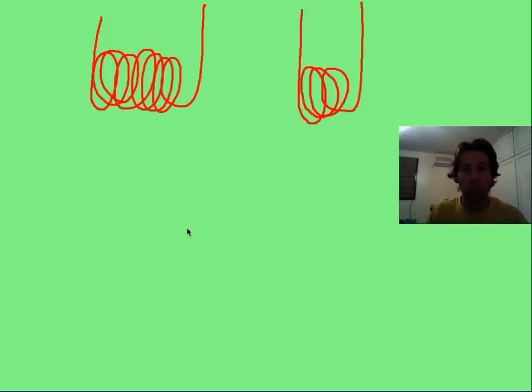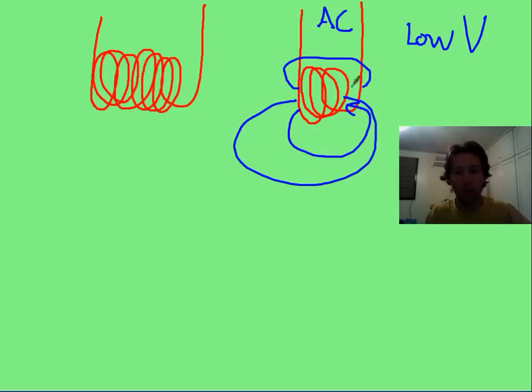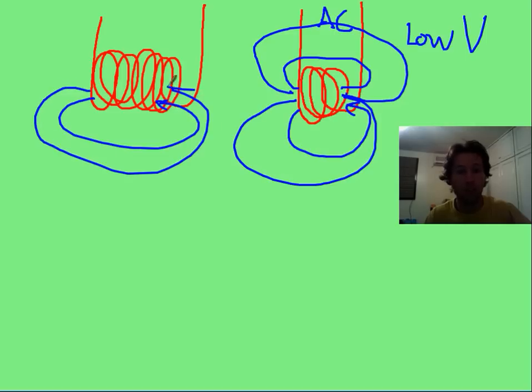To make a very simple transformer, let's say I've got a coil with lots of coils right here and then near it I've got a coil with not very many. Let's say that this is alternating current low voltage. This is going to make a lot of flux lines like a bar magnet and it's going to be oscillating, flipping back and forth the north pole and south pole. That's going to induce a current and a voltage over here that's going to fight it based on Lenz's law.